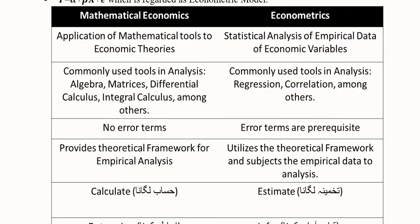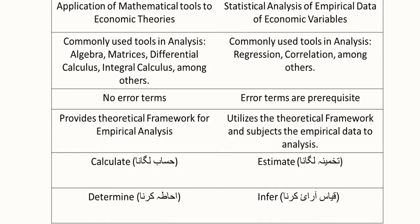In mathematical economics, mathematical tools are applied to economic theories. In econometrics, statistical tools are used to analyze real-life or empirical data on economic variables. In mathematical economics, common tools include algebra, matrices, differential calculus, and integral calculus, whereas in econometrics we use regression, correlation, and other tools from statistical sciences.